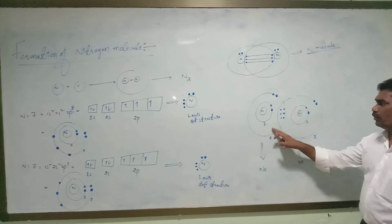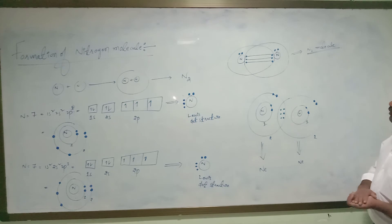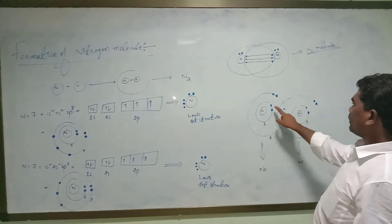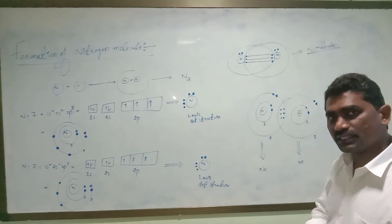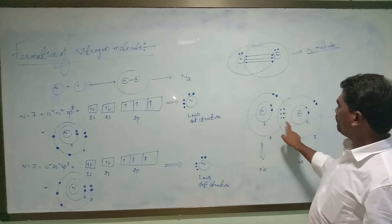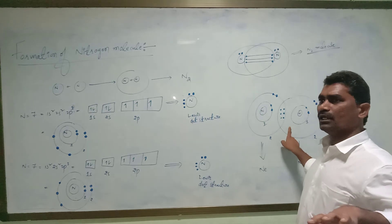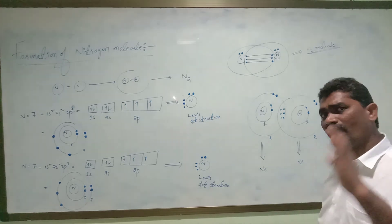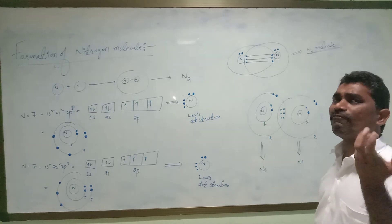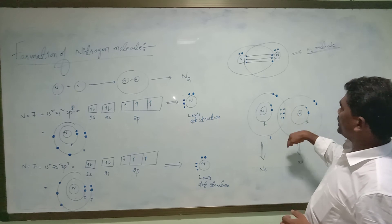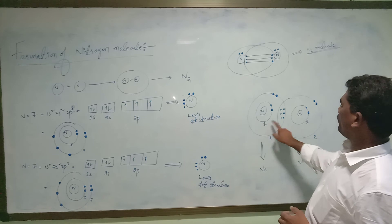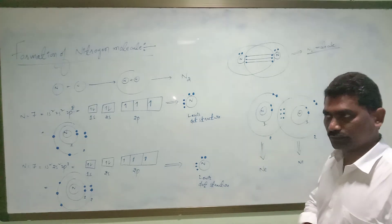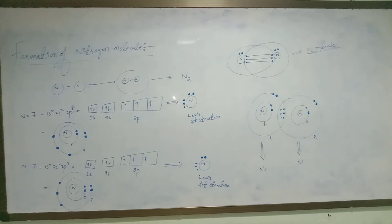To become stable, only two nitrogen atoms combine together to form a nitrogen molecule. This is the formation of the nitrogen molecule. Six electrons are being shared — sharing of electrons is taking place — and a bond is formed between two nitrogen atoms. Any bond which is formed by the sharing of electrons is called a covalent bond. Covalent bond means a bond formed due to the sharing of electrons.